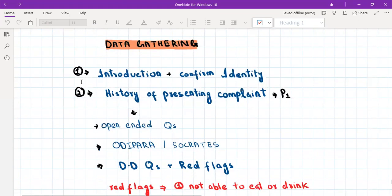Then the next step is a history of presenting complaint. So first of all, you will ask open ended questions, how may I help you today? And they will give you a symptom, maybe fever. So the common symptoms in children are fever, rash, breathing difficulty, wheeze, ear pain. These are common symptoms in pediatric. So then you will ask open ended questions about the symptom. You will ask, can you please tell me a bit more about it? You will ask OLDIPARA and SOCRATES.